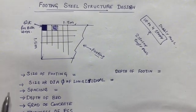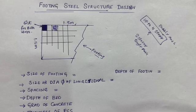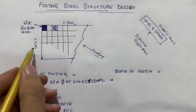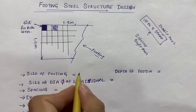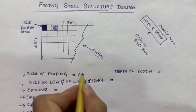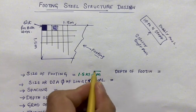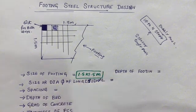What should be the size of the footing? The size of the footing for a normal residential building up to 4 storey, as discussed, is 1.5 meter by 1.5 meter by 1.5 meter.